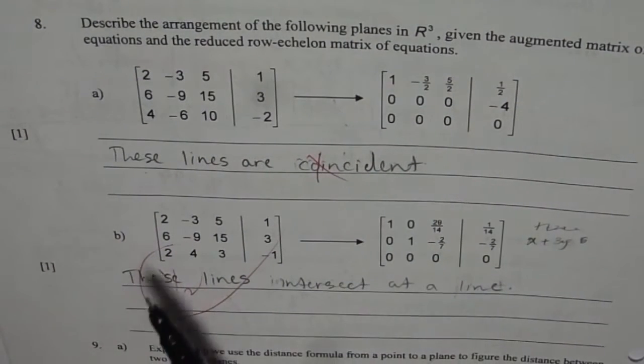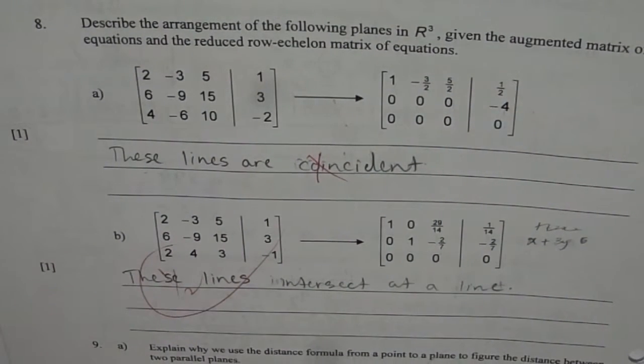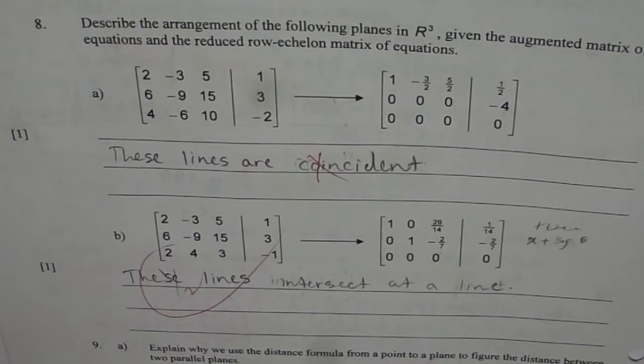The matrix here is 2, -3, 5, 6, -9, 15, 2, 4, 3, 1, 3, -1, and it could be written as shown here.